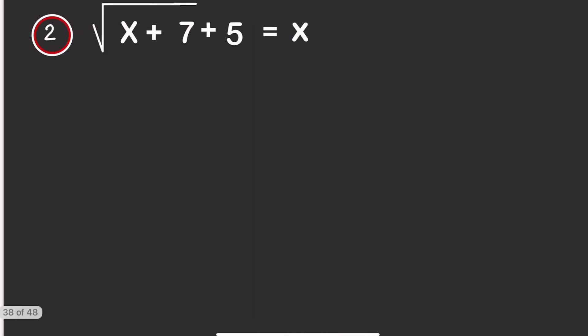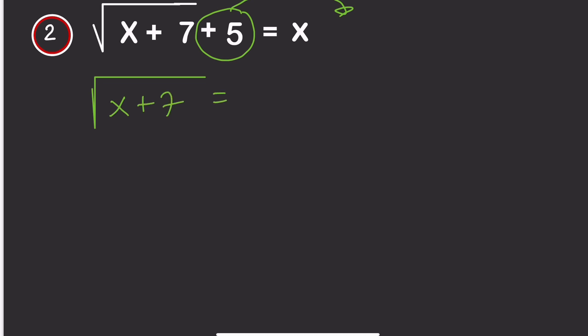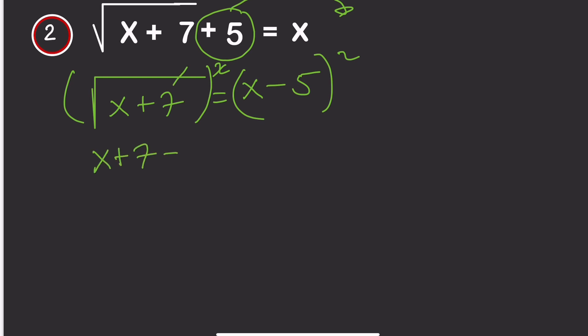Let's move to the next question. For this question we need to make sure the square root is set apart. We take the plus 5 across, so it becomes minus 5. This gives us the square root of x plus 7 equals x minus 5. Now we can square both sides to remove the square root, leaving x plus 7 equals x minus 5 squared.